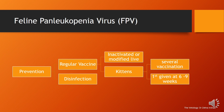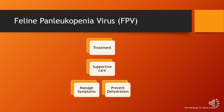Prevention is primarily achieved through a regular vaccination schedule. Inactivated or modified live vaccines should be used in kittens, with the first vaccination given at six to nine weeks of age, continuing until 16 weeks. Disinfection must also be performed; peroxygen disinfectants are preferred as strong oxidizing agents — the most common being hydrogen peroxide — used to clean surfaces.